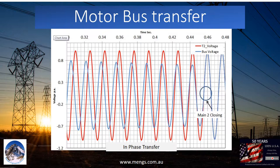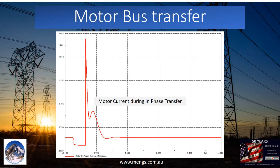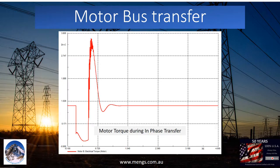In this slide, we can see how frequency difference generates phase angle difference. Since in-phase transfer happens within 10 to 50 cycles, the motor speed does not drop much. The transfer current in this type of transfer is between 1.5 to 3 times nominal current. Because in-phase transfer closes at the right angle, motors won't go to generating mode during transfer, and we will not observe large transfer transient torque.